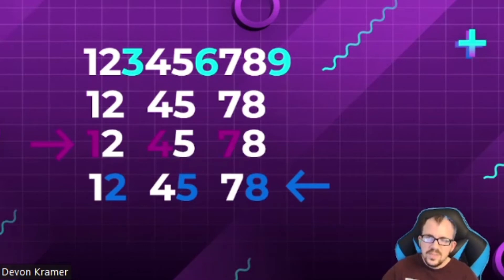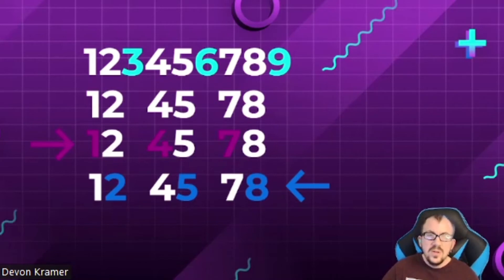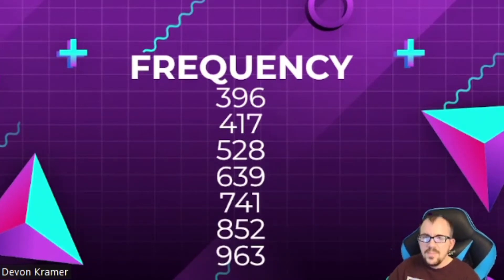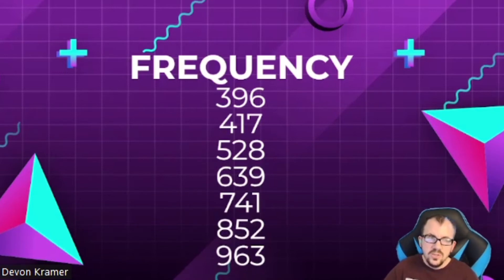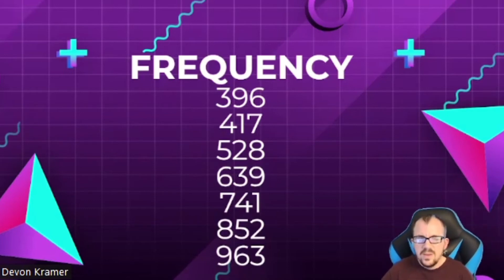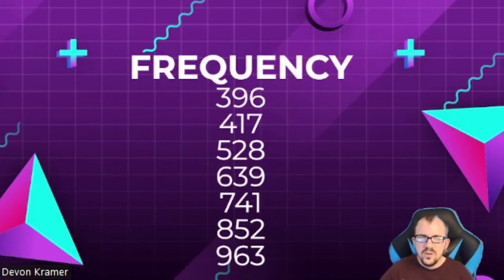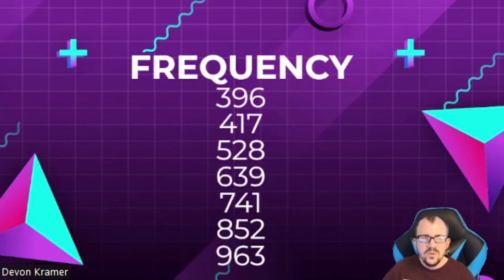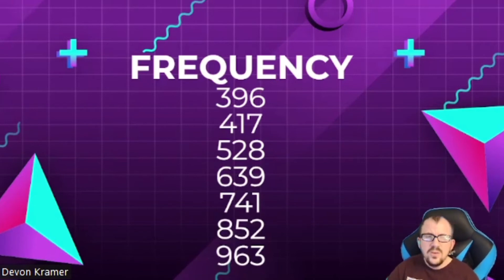One, four, seven going clockwise and eight, five, two going counterclockwise are very important when talking about chakras, because all chakra frequencies are found in these patterns. There are seven frequencies: 3-9-6 is your root chakra, 4-1-7 is your sacral chakra, 5-2-8 is your solar plexus chakra, 6-3-9 is your heart chakra, 7-4-1 is your throat chakra, 8-5-2 is your third eye, and 9-6-3 is your crown chakra.